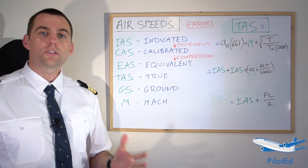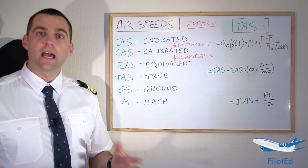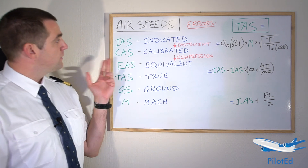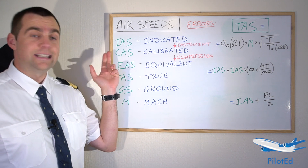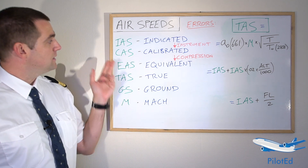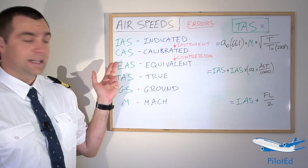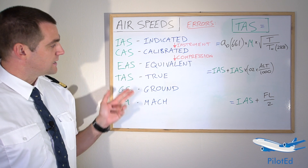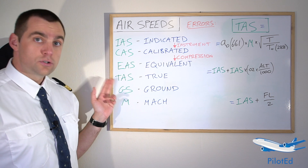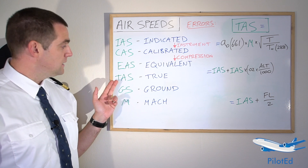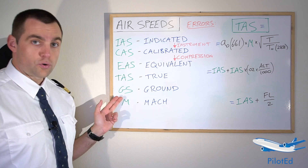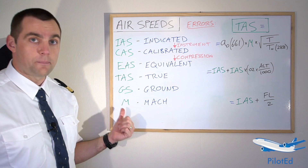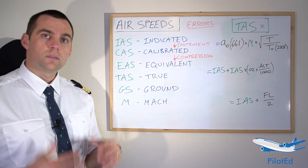So what types of airspeeds do we have? What definitions are there? First of all, we've got indicated airspeed, calibrated airspeed, equivalent airspeed, true airspeed, ground speed and our Mach number. These are all the speeds we work with in the aircraft.